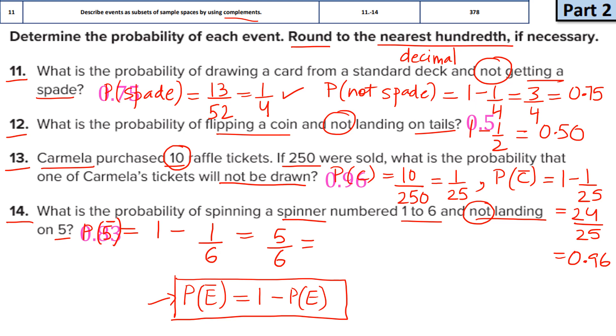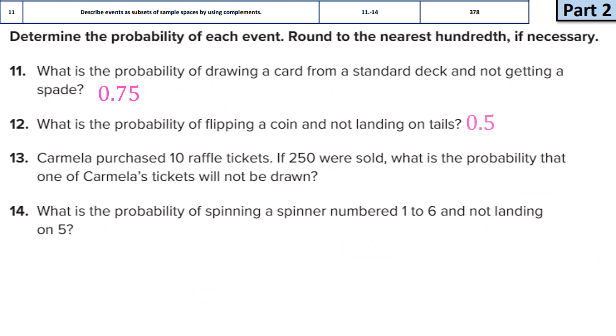And in decimal, it is going to be 0.83. So your final answers for question 11 is 0.75, for question 12, 0.50, for question 13, 0.96, and finally for question 14, 0.83. Here we have given answers in decimal because the question asked us to round to nearest hundredth, that is 2 decimal places. So these are the final answers for the 4 problems. I hope you found the video useful.